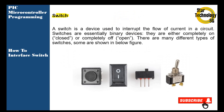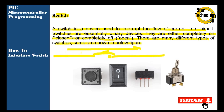A switch is a device used to interrupt the flow of current in a circuit. Switches are essentially binary devices — they are either completely on (closed) or completely off (open). There are many different types of switches. A switch controls the flow of current: when the switch is closed, current flows; when the switch is open, no current can flow.